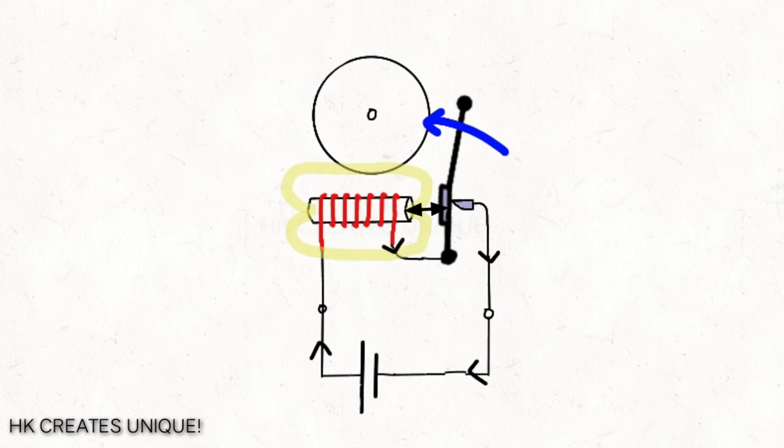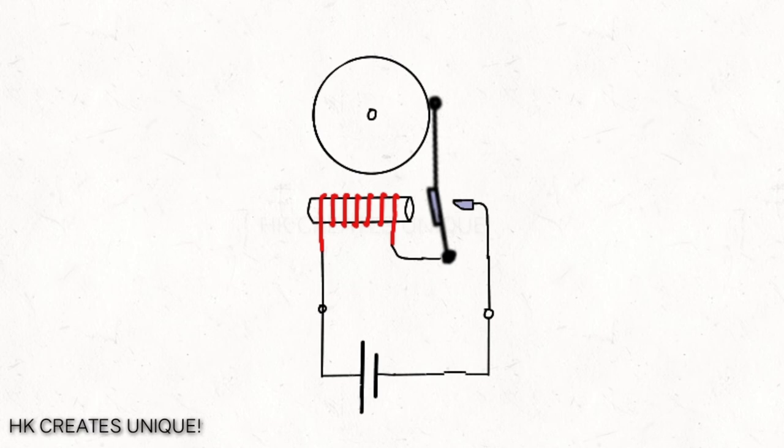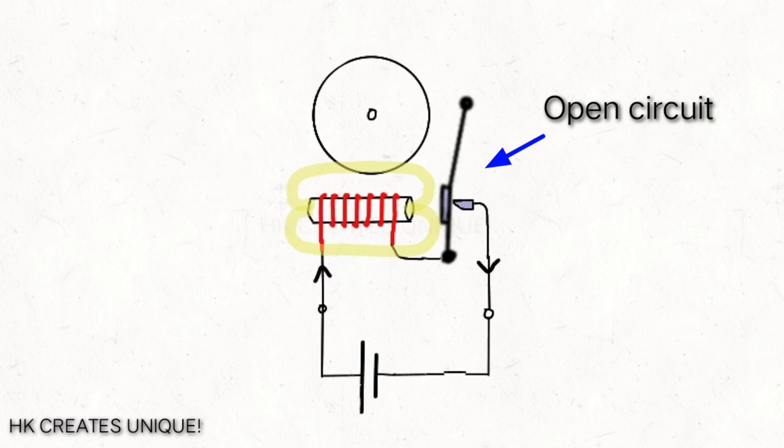And therefore the electromagnet no longer attracts the striker. The striker goes to the original position, the circuit closes again, and repeats the same action over and over. The striker also hits the gong continuously.